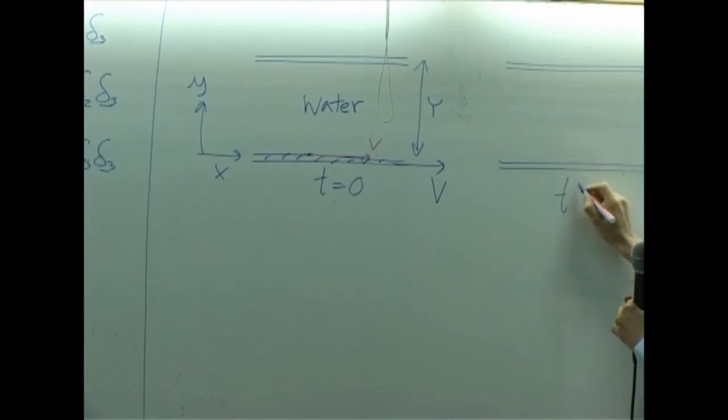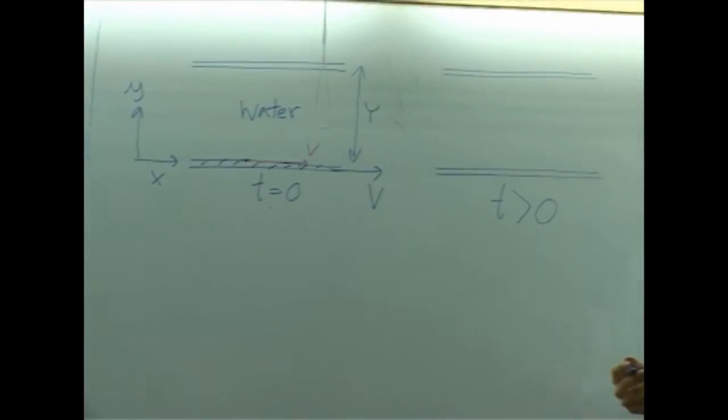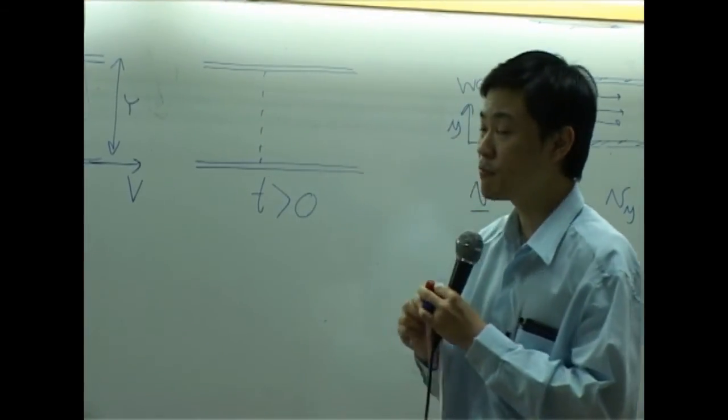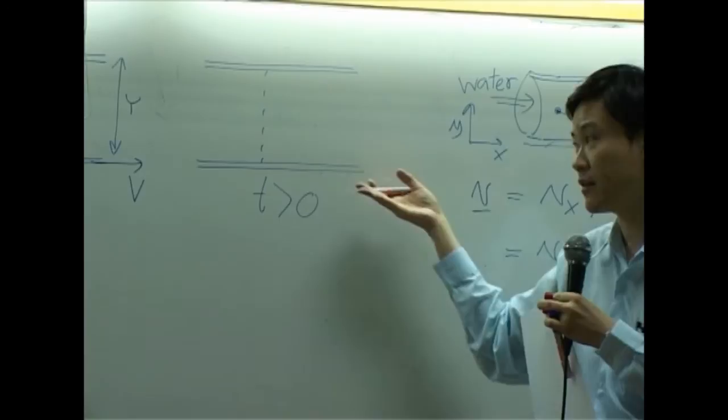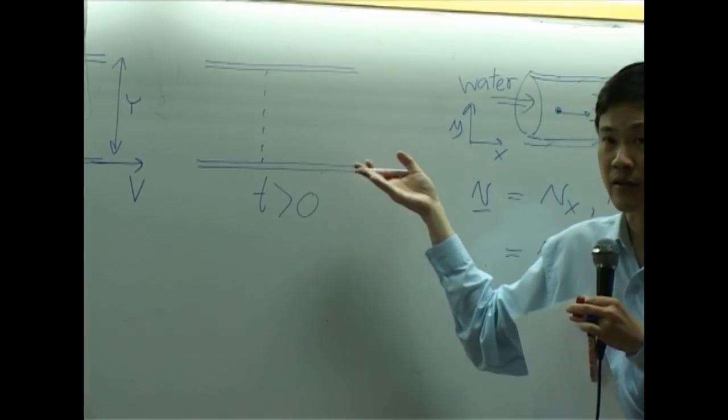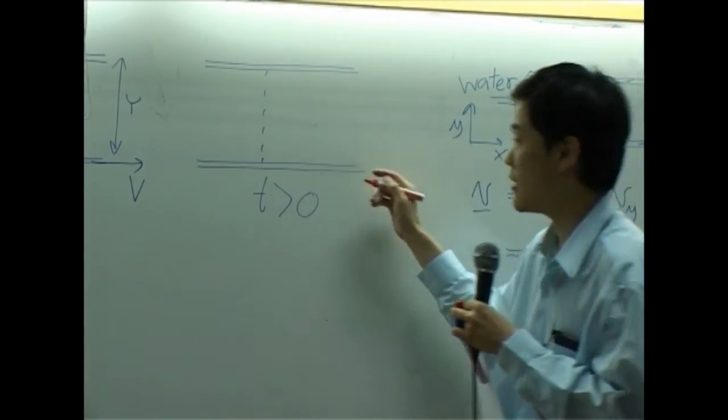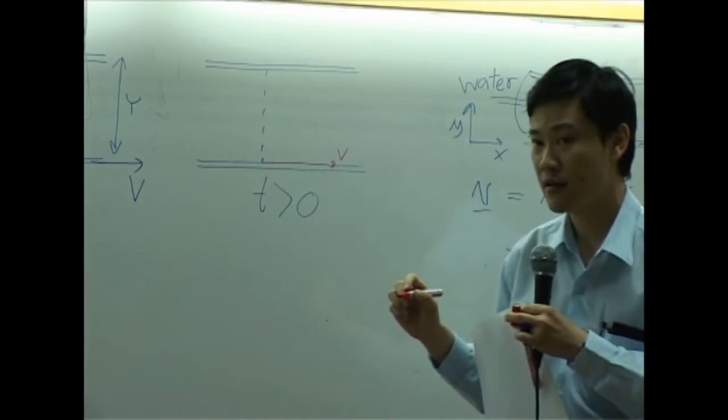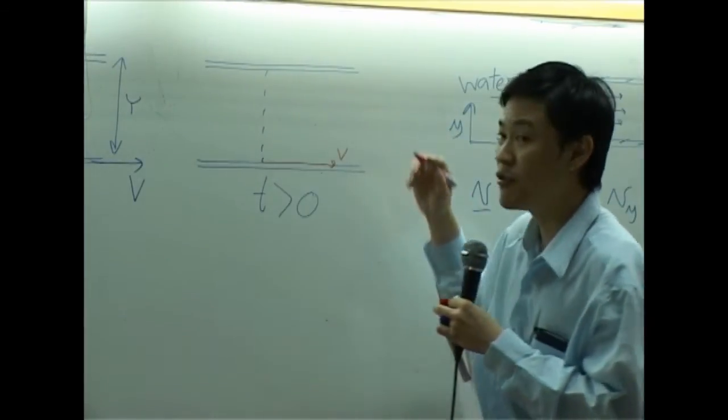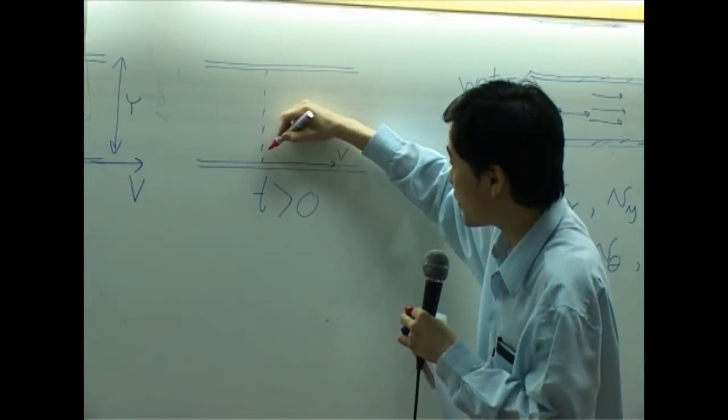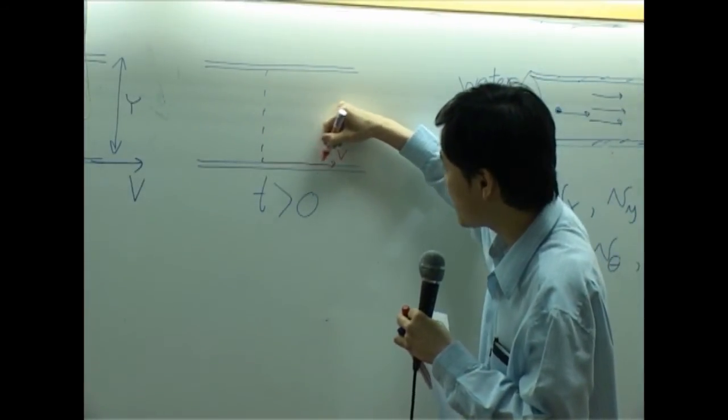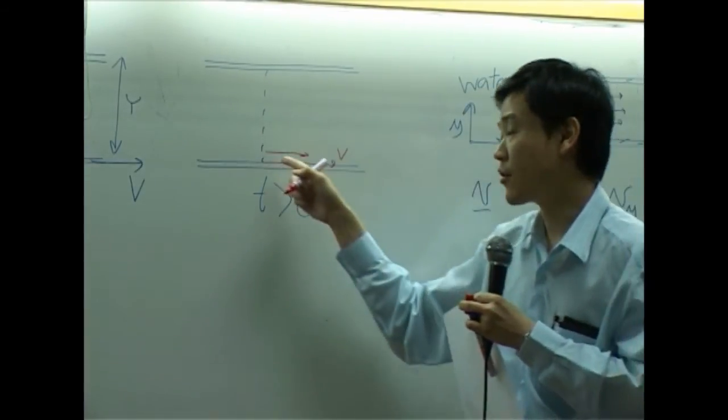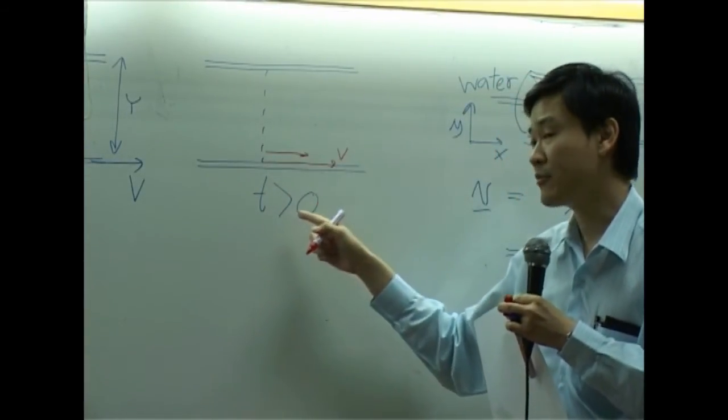At T greater than zero, what happened is, as long as you pull, you still keep pulling the bottom plate with continuous velocity, the velocity here would remain V. Now, you will notice that water right above it would have velocity as well. It starts to move at time greater than zero.